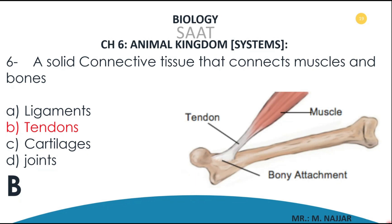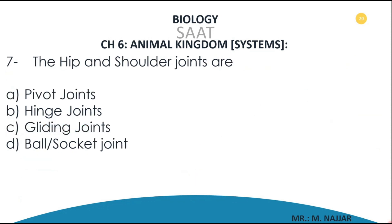So as not to be tricked — question number seven: the hip and shoulder joints are A) pivot joints, B) hinge joints, C) gliding joints, D) ball and socket joints. The correct answer is D — ball and socket joints.